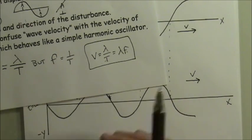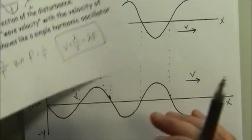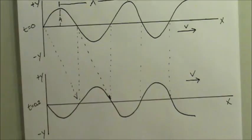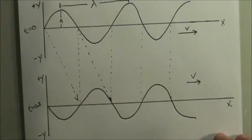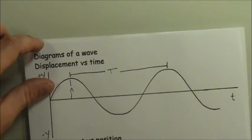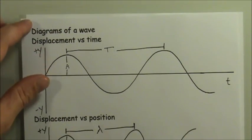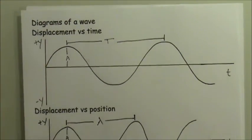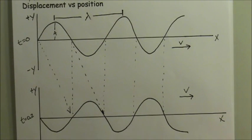So those are the two types of graphs: displacement versus time, which we already looked at with simple harmonic motion, and the displacement versus position graph.